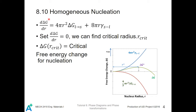We take the derivative and set it equal to zero, then find the R-value — the critical radius, R-critical. This critical radius describes the minimum radius the nucleus must first reach in order for nucleation to freely grow. From zero radius, nucleation first requires energy input, and then afterwards it will start releasing energy, which allows the nucleation to grow.